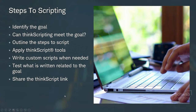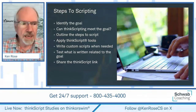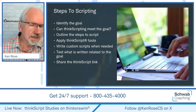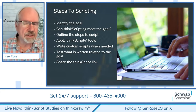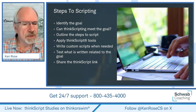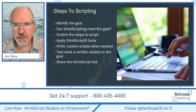The process we usually use here is we identify a goal and ask ourselves whether ThinkScripting can meet that goal. There's a lot you can do with ThinkScripting, but unfortunately not everything. When we identify the goal, we ask if ThinkScripting can be helpful in these situations — and usually it can. Then we outline the steps, apply the ThinkScript tools, write custom scripts when needed, and test what is written related to the goal. We've done all these steps in relationship to the average true range script presented last week, provided by our good friend Robert Boucher.